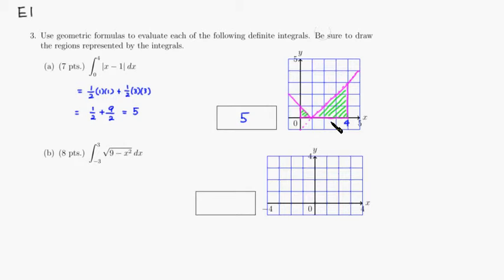Let's look at part B. Y equals square root of 9 minus x squared. This is actually a semicircle with radius 3. 9 is 3 squared, so radius is 3.